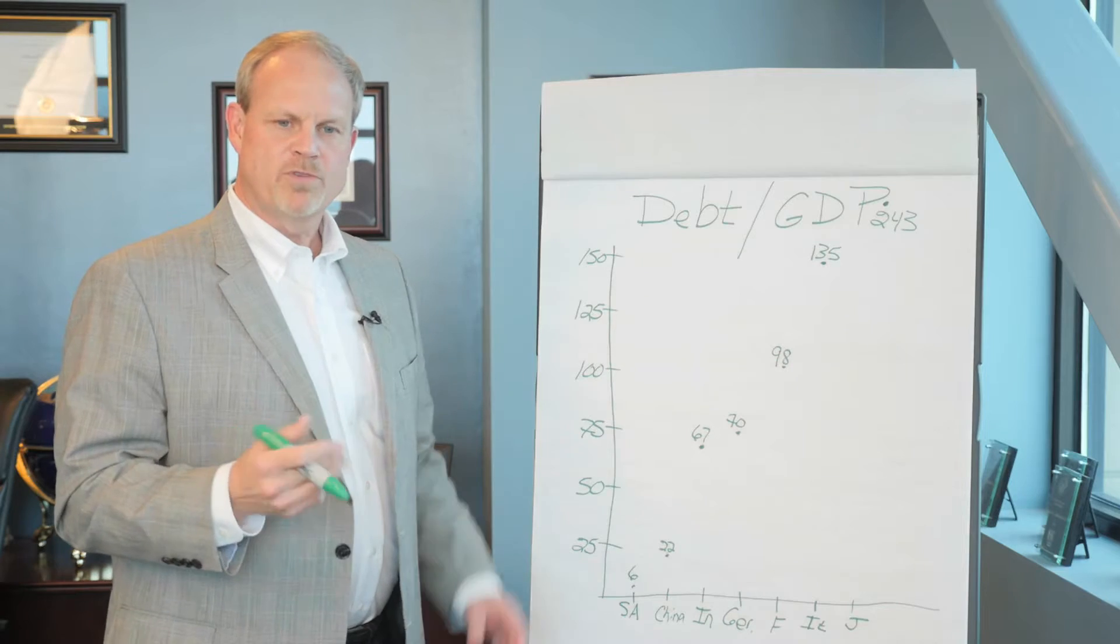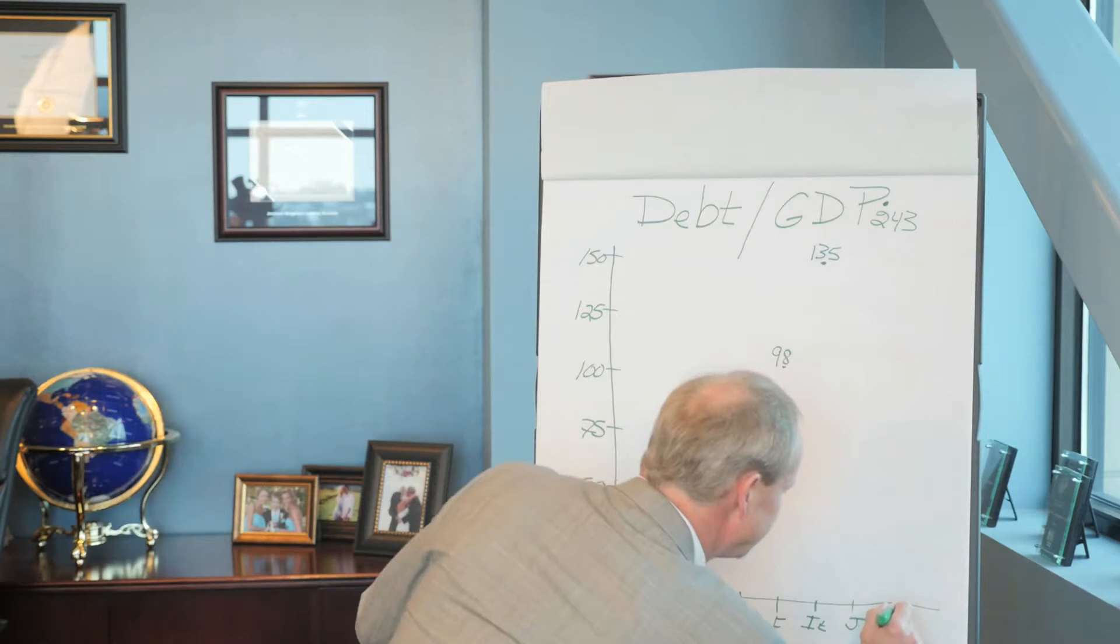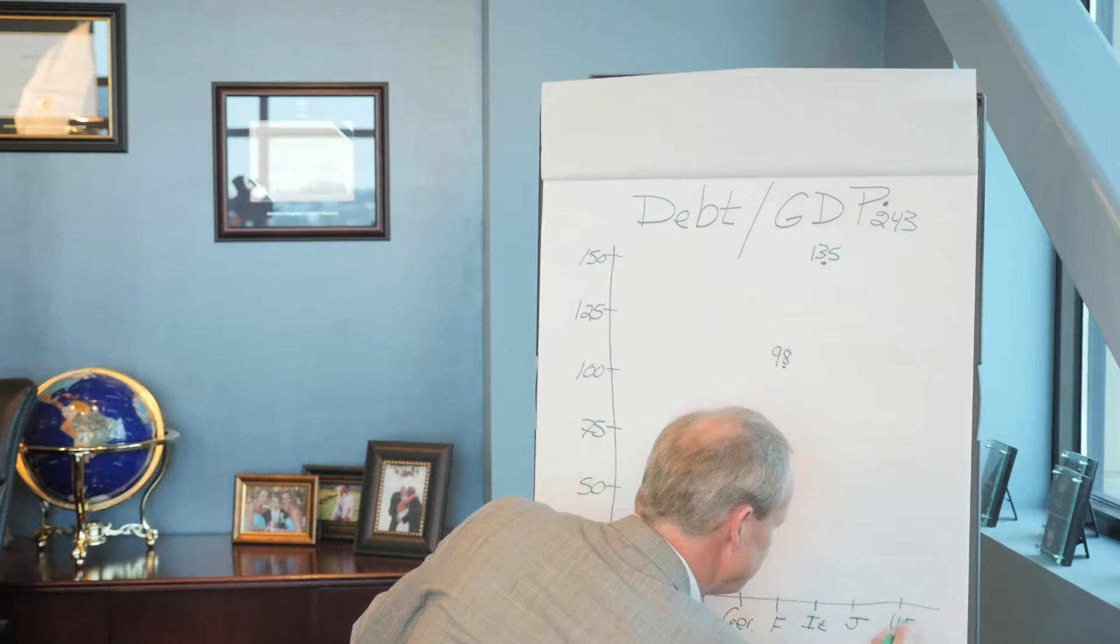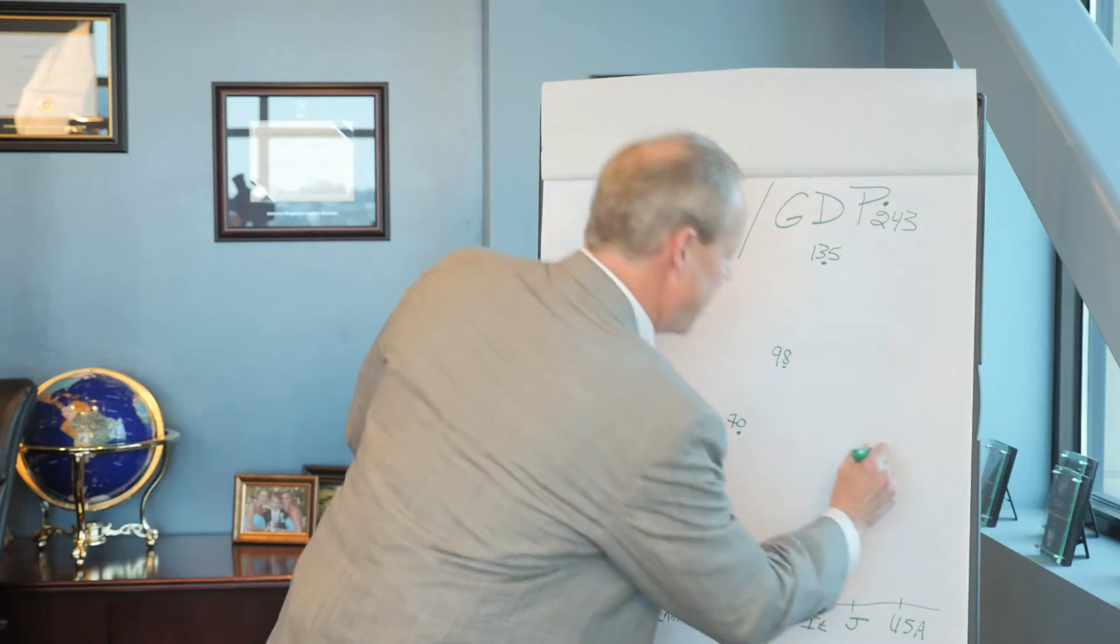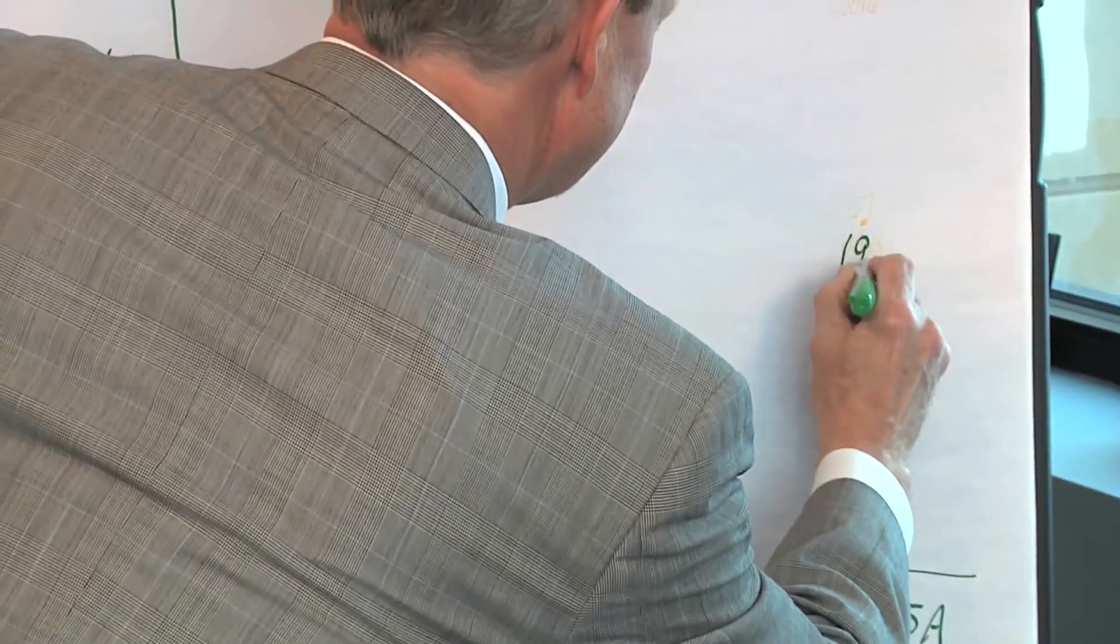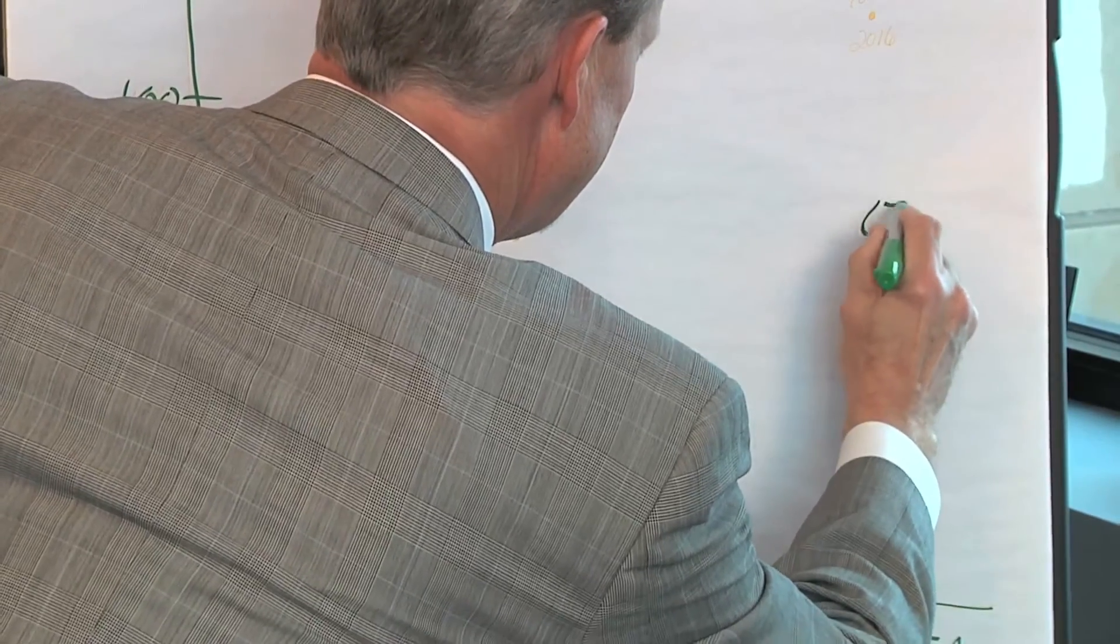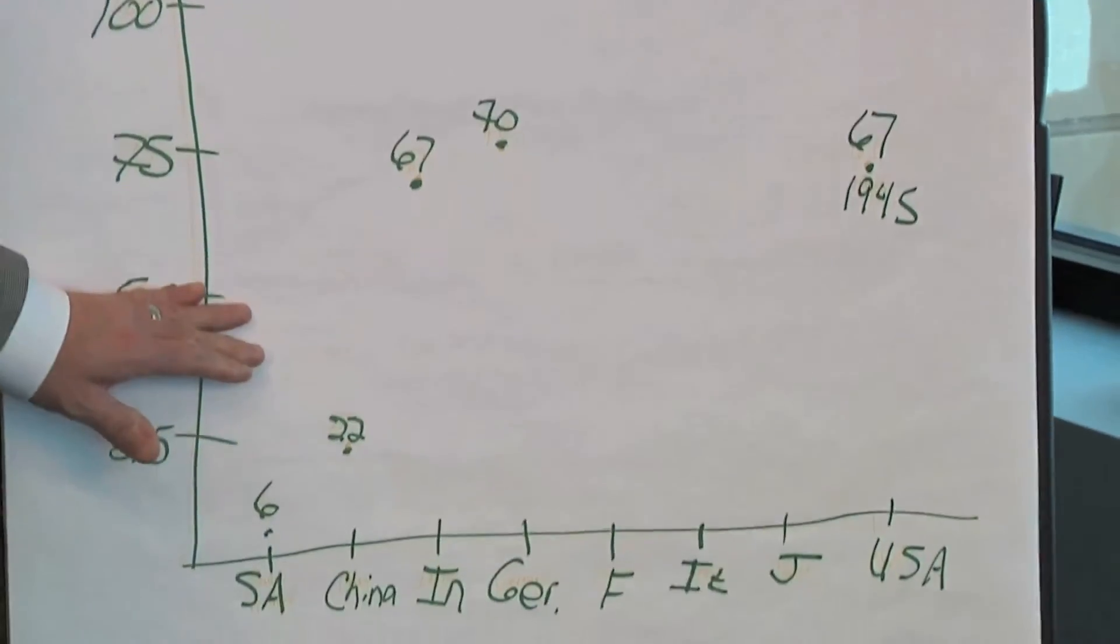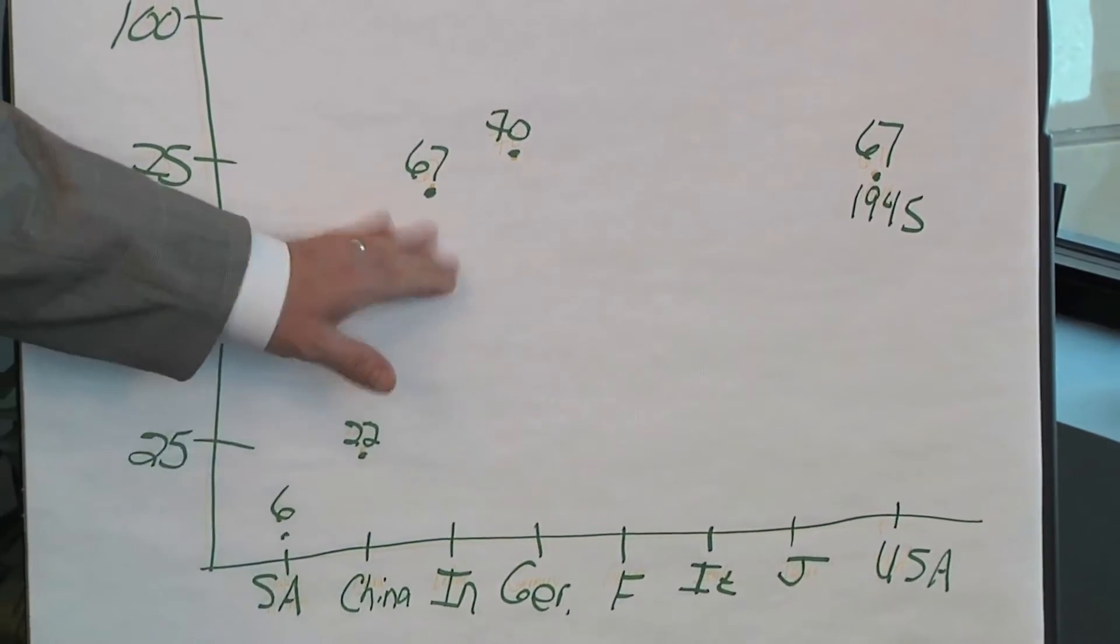So you may ask, where's the United States? Well actually, the United States, if I look back in 1945, our debt to GDP was at 67%, the same as India's is today.